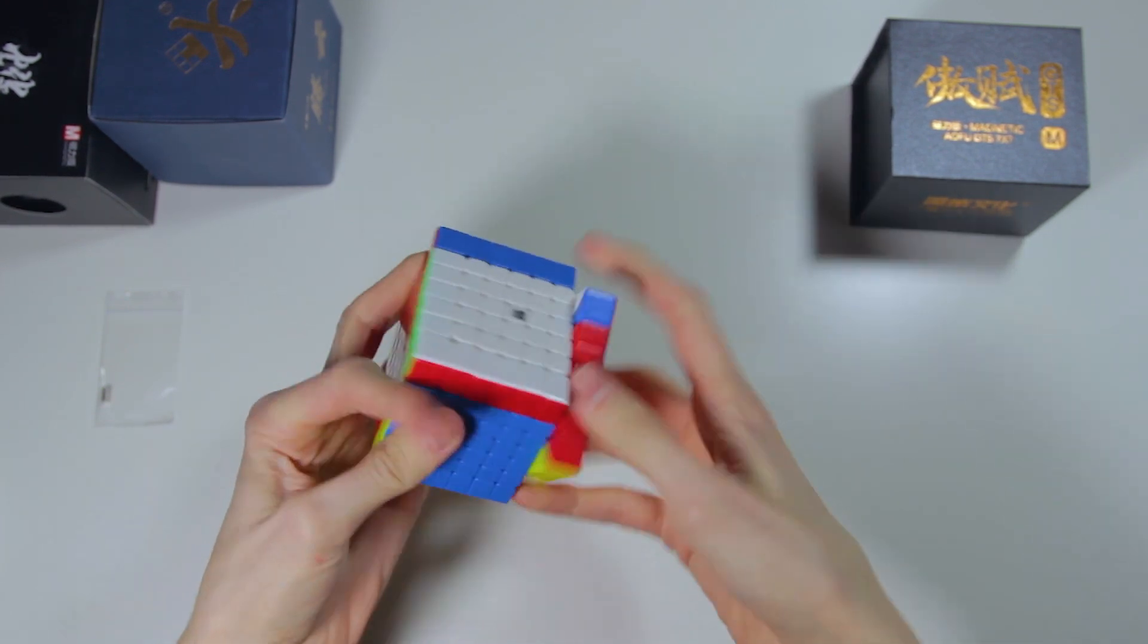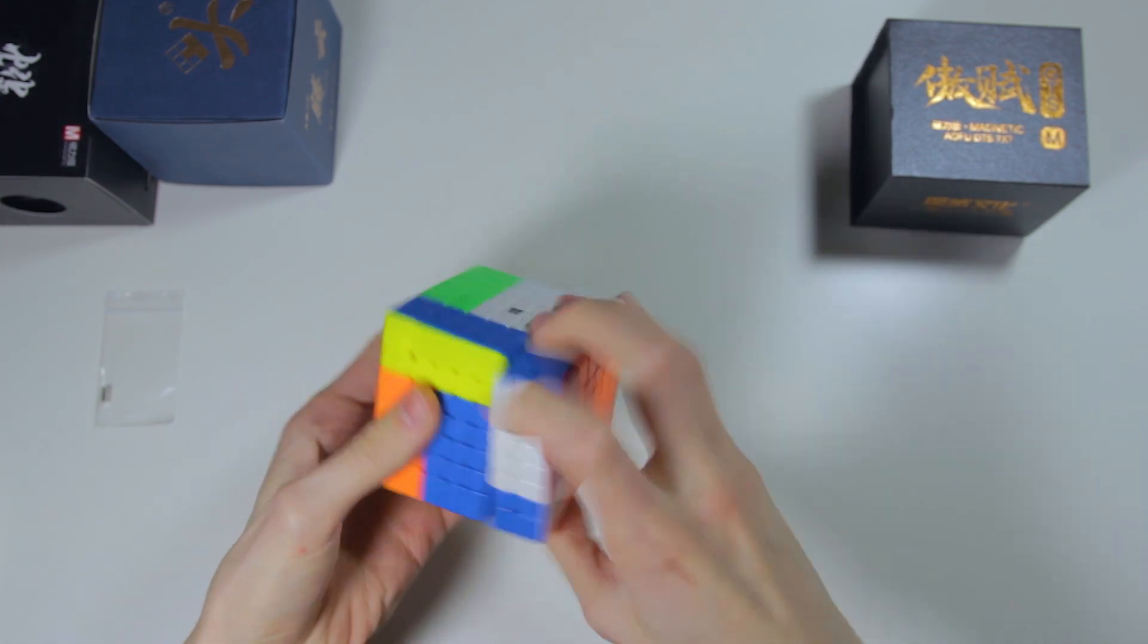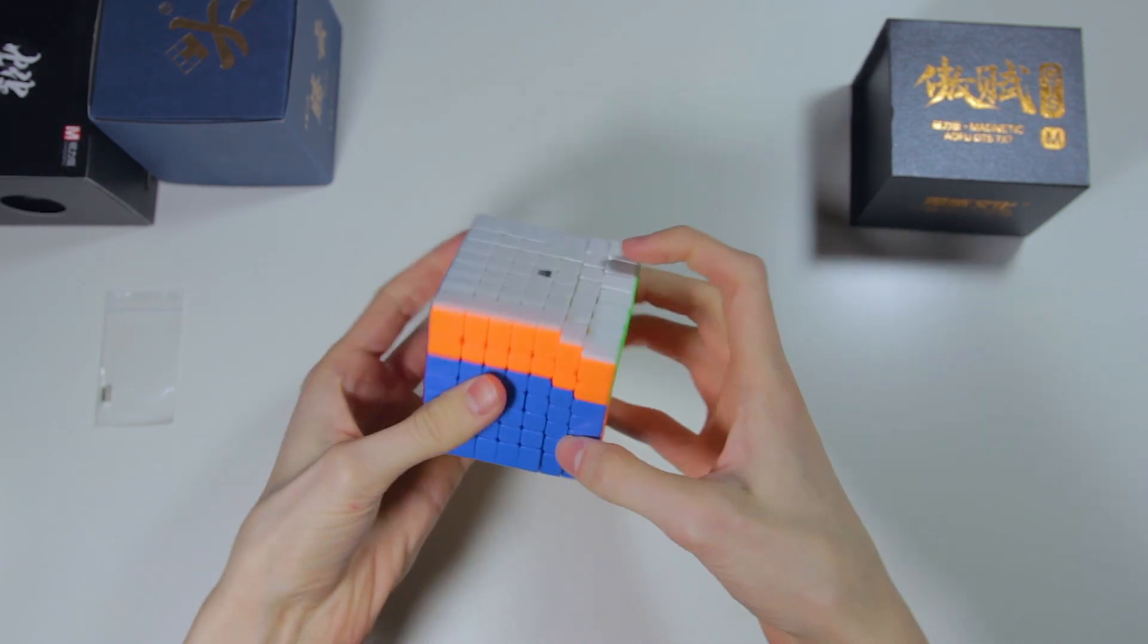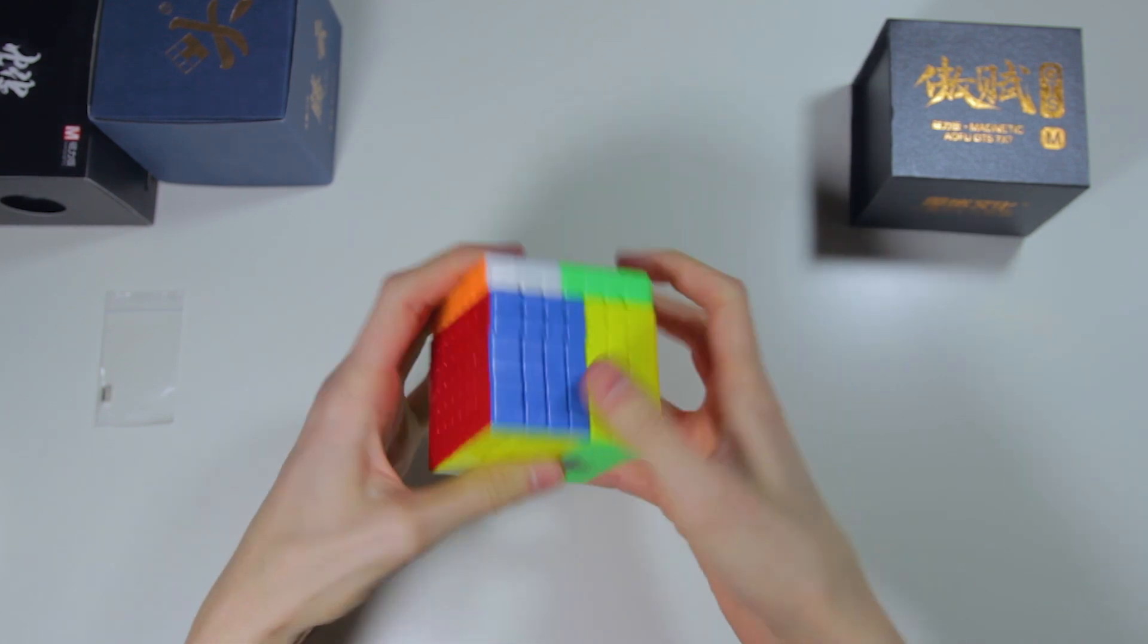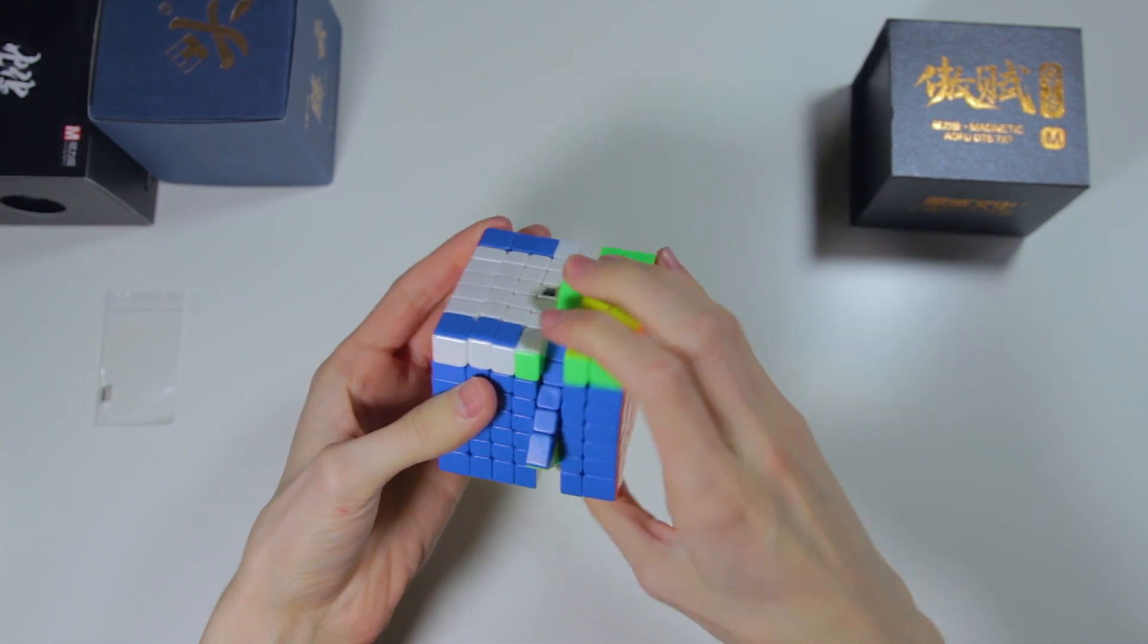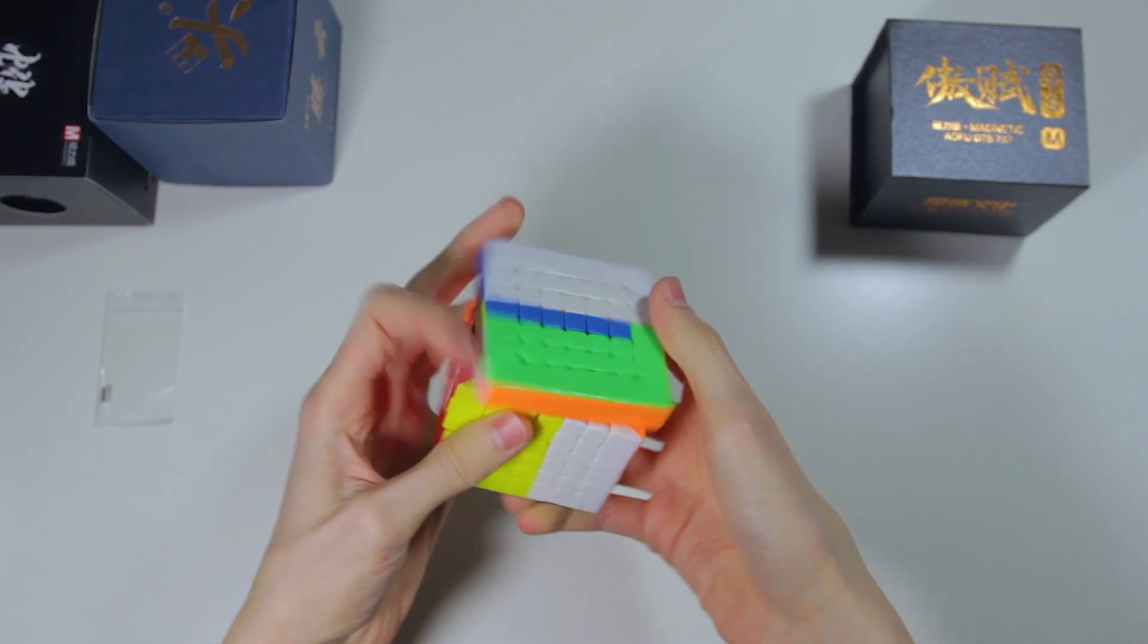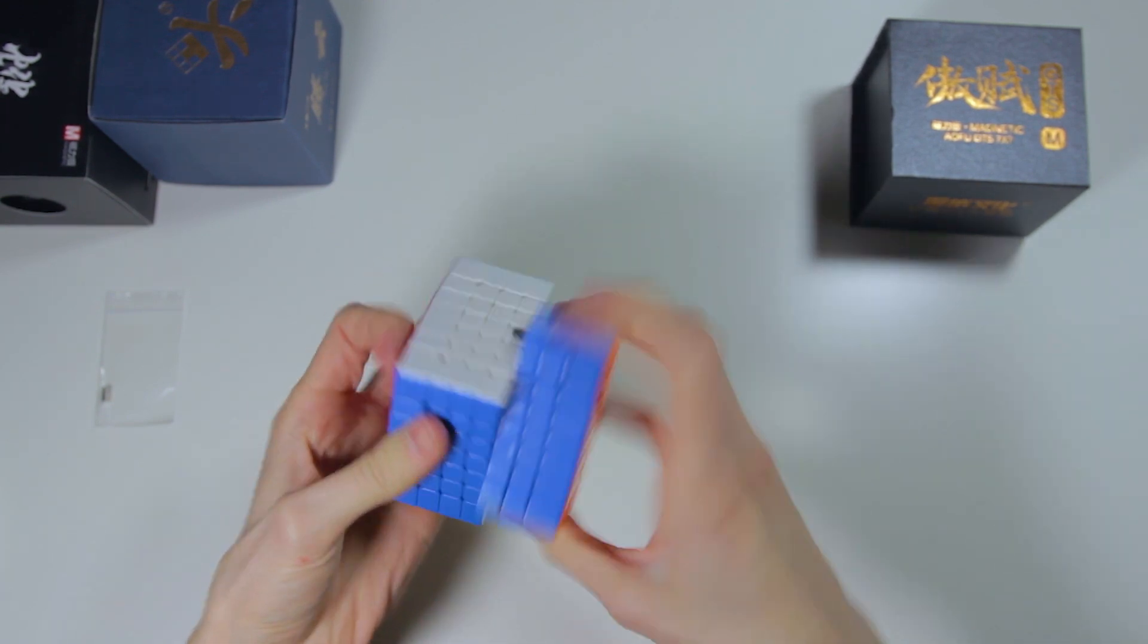Doing first turns, I can definitely tell that this is a new and improved version of the Aofu because it has the same soft, smooth, and slightly sluggish feeling that the Aofu originally had. The tensions also feel very tight out of the box, and so right now, the turning isn't very fluid. However, in my experience, 7x7s take a while to reach their full potential, so I'll definitely have to do a lot of solves on this cube before I can really decide my opinion on it.